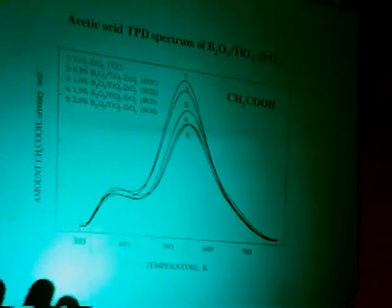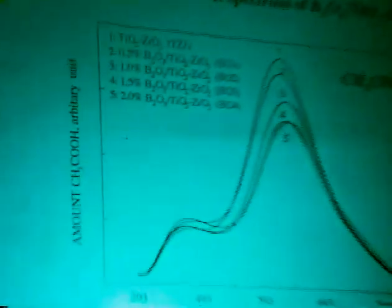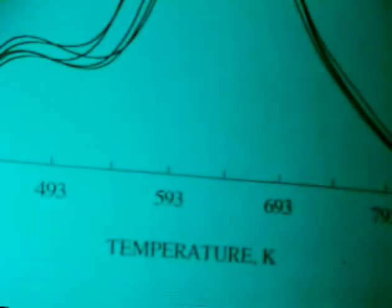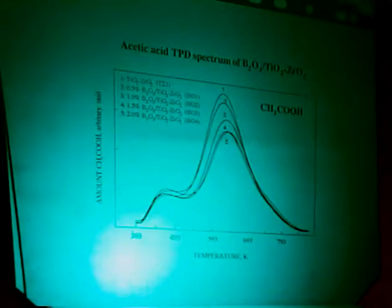Then we use the acetic acid TPD spectrum to study the base amount. We use boric oxide to impregnate on the titanium-zirconium surface. The desorption amount of acetic acid decreases with increasing boric oxide doping amount. So it's very clear: using boric oxide impregnation, you can poison the base site of the catalyst.